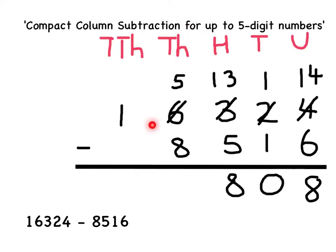In the thousands column I have got 5,000 subtract 8,000. Again I can't do this, so I must use the ten thousands column to help me. So in the ten thousands column I've just got a 1 which represents 10,000. Partitioning this into the number of ten thousands that make that up, I have just got 10,000 and 0.